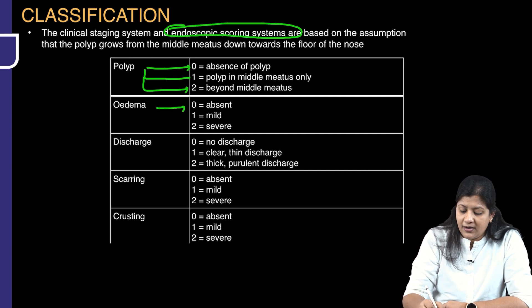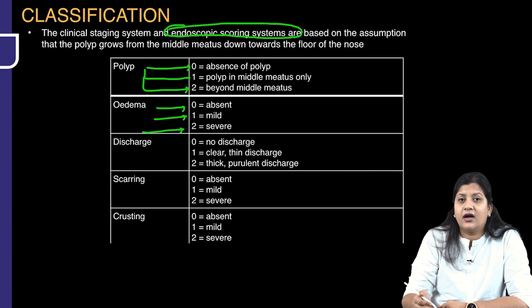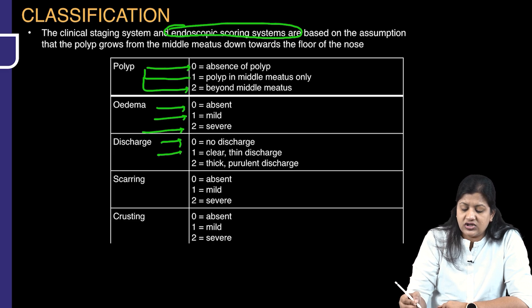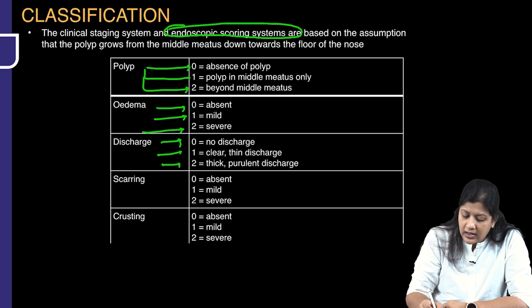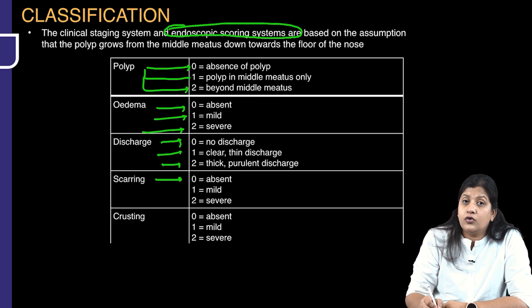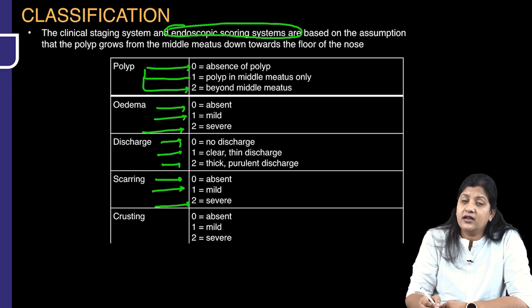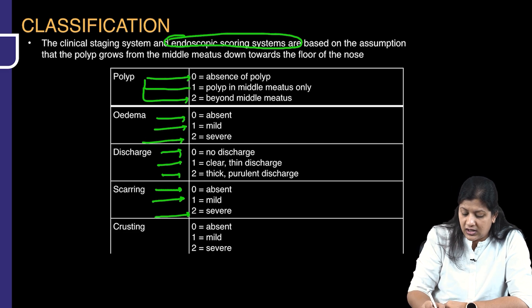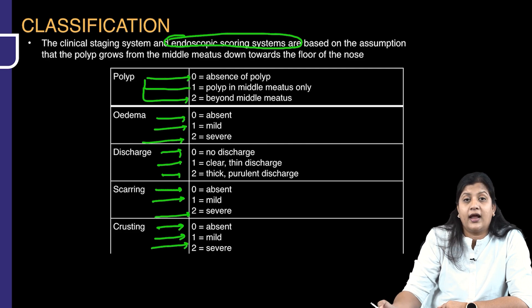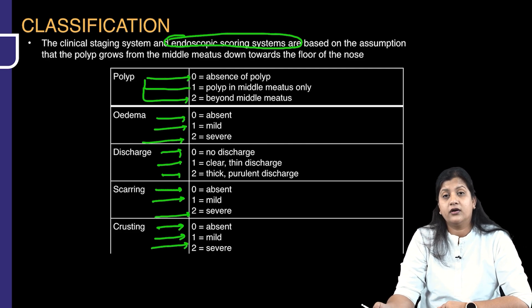For edema: no edema scores zero, mild edema scores one, and severe edema scores two. For discharge: no discharge is zero, clear discharge is one, and thick discharge is two. For scarring — which is usually a sequel of prior surgery — no scarring is zero, mild scarring is one, and severe scarring is two. For crusting: no crusting is zero, mild crusting is one, and severe crusting is two.